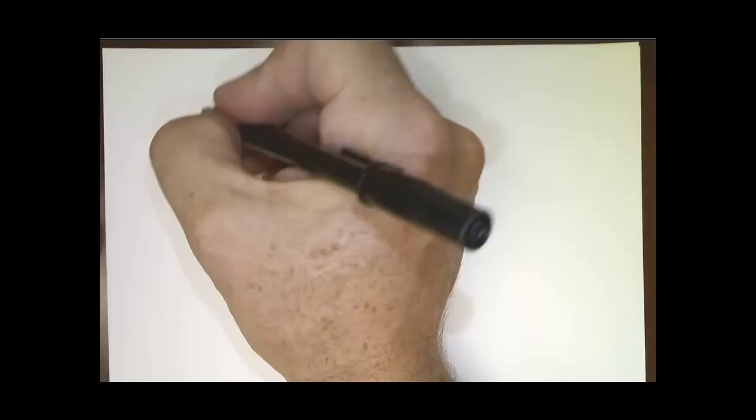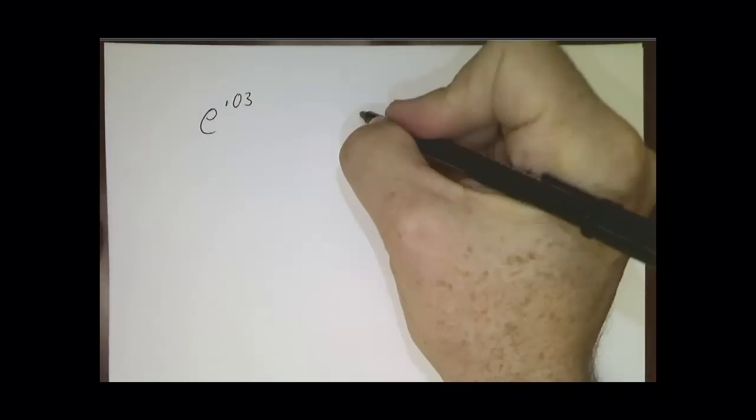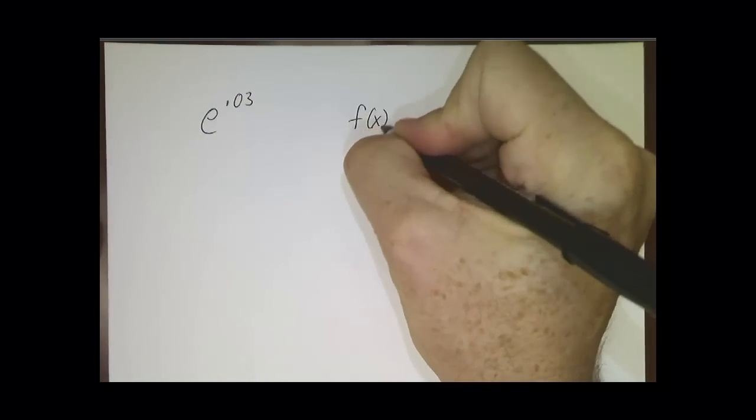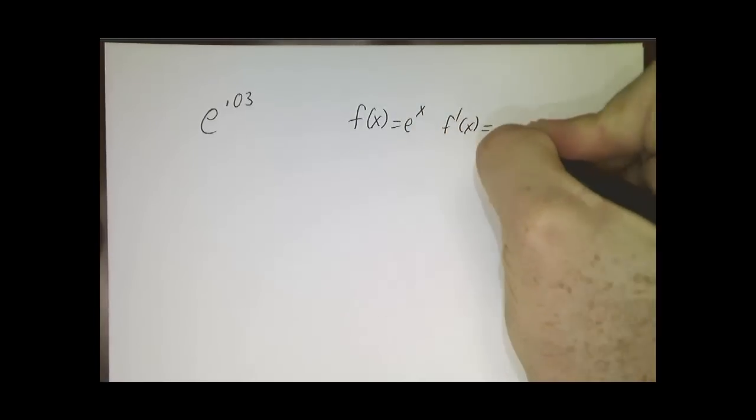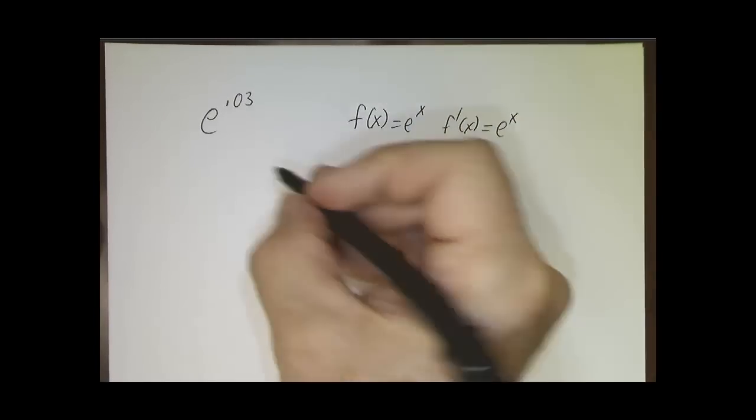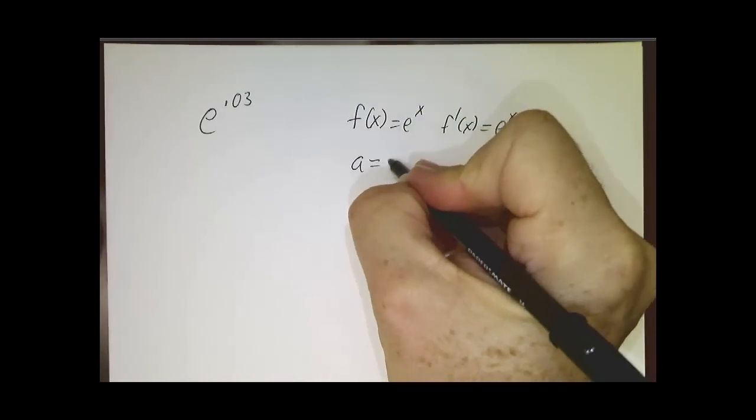Let's do another example. This time, we want to compute e to the 0.03. So in this case, we say f is e to the x, f prime is e to the x, and 0.03 is very close to 0.